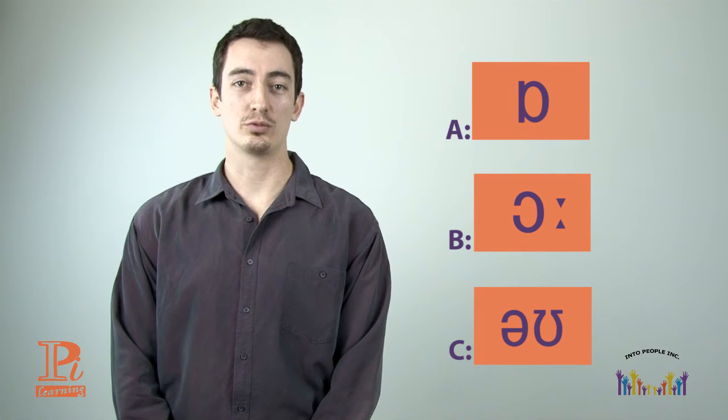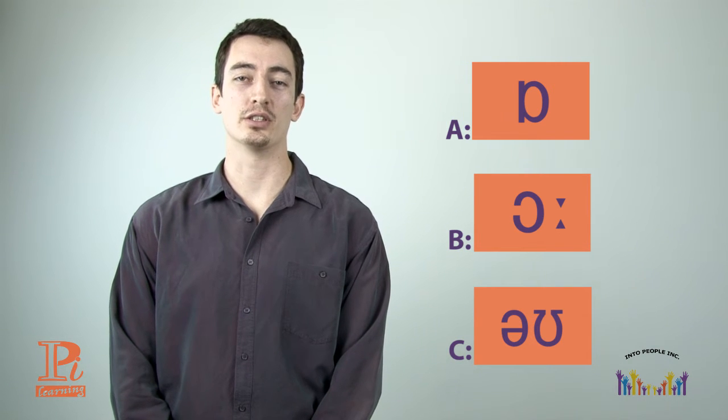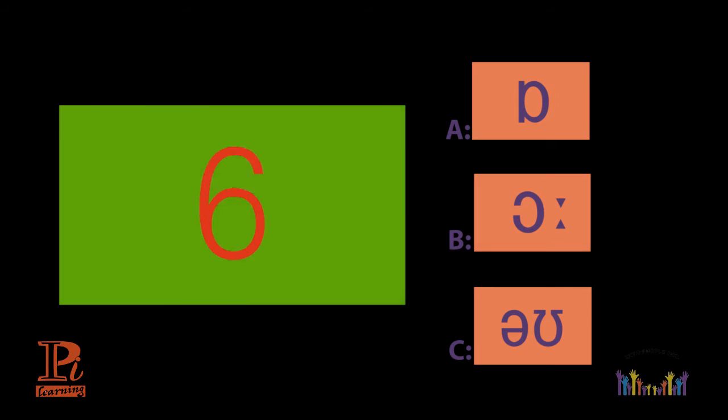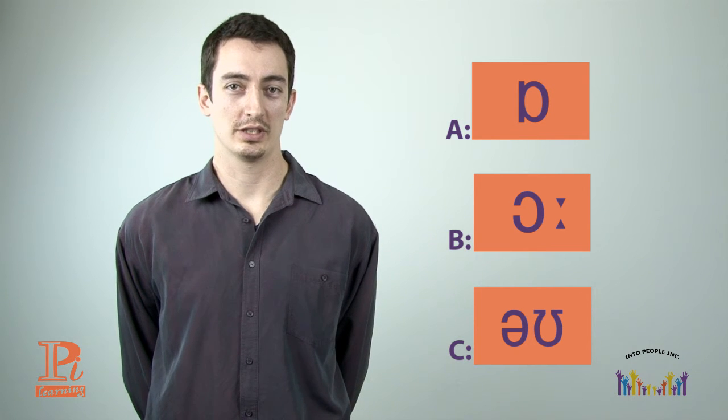Let's do an example. Growth. Growth. Which sound and symbol are in the word growth? Is it A, B or C? Time's up. The answer is C. O. Growth. O. Okay, let's do it. How many can you get right?